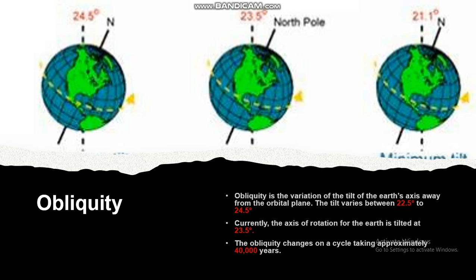Obliquity is the variation of the tilt of the earth's axis away from the orbital plane. The tilt varies between 22.5 degrees and 24.5 degrees. Currently, the axis of rotation for the earth is tilted at 23.5 degrees. The obliquity changes over a cycle taking approximately 40,000 years.